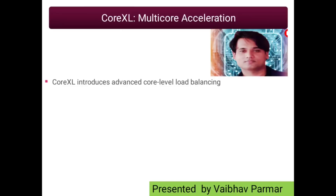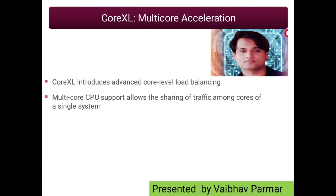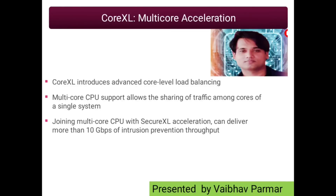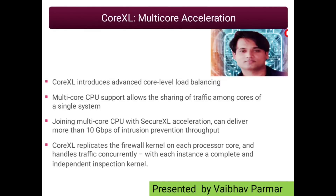Now let's see what features we get from Core XL. Core XL introduces advanced core-level load balancing. Multi-core CPU support allows sharing of traffic among the cores of a single system. Joining multi-core CPU with Secure XL isolation can deliver more than 10 gigabytes per second of intrusion prevention throughput. Core XL replicates the firewall kernel on each processor core and handles traffic concurrently, with each instance providing complete and independent inspection within the kernel.